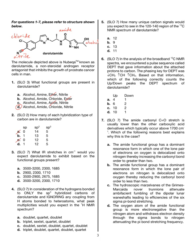Let's go ahead and count the SP2 hybridized carbons. The benzene ring gives us 6. Coming over to the other ring: 7, 8, 9, 10, 11, 12, 13. So the correct answer here is going to be B.